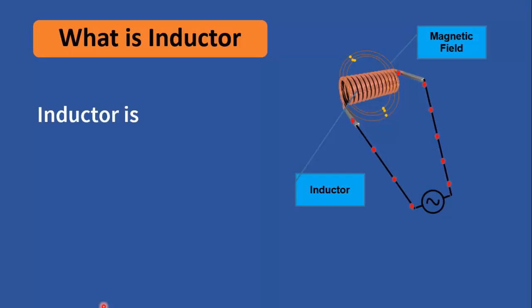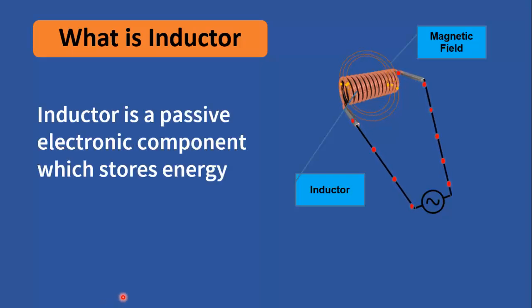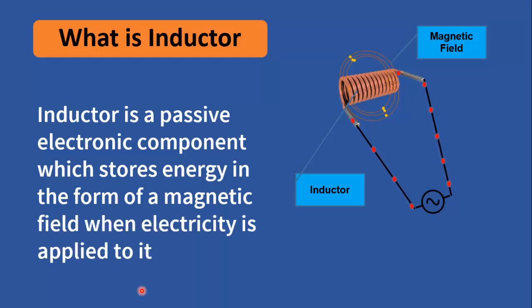Generally speaking, inductor is a passive electronic component which stores energy in the form of a magnetic field when electricity is applied to it. Here you can see, an inductor is a coil of conductor which generates a magnetic field when electrical current flows through it.